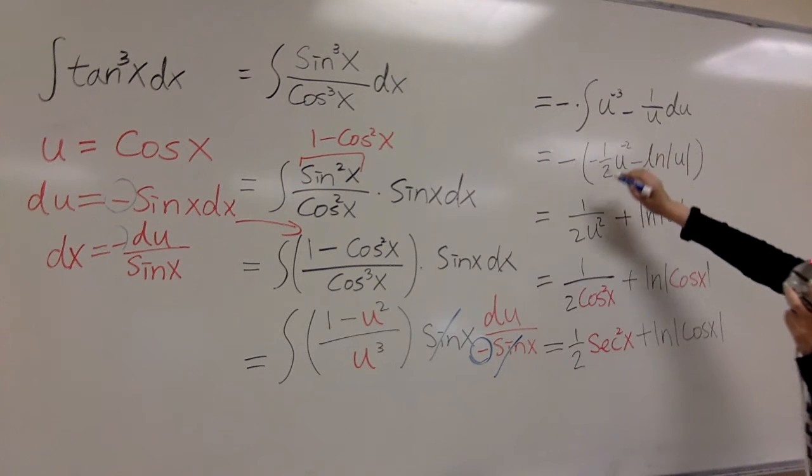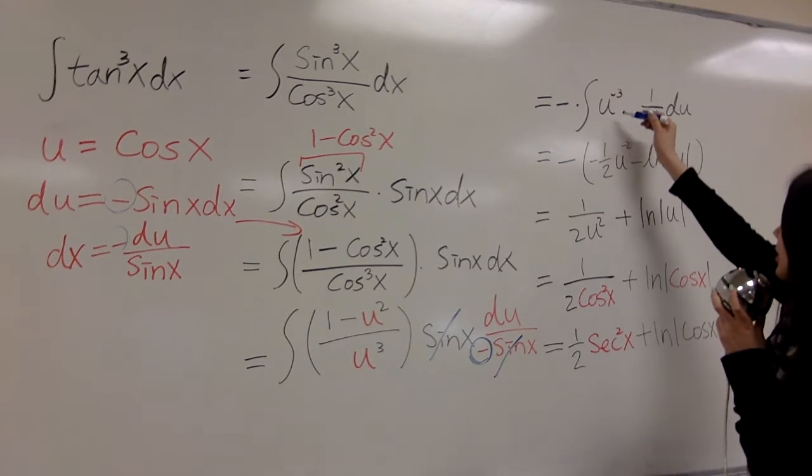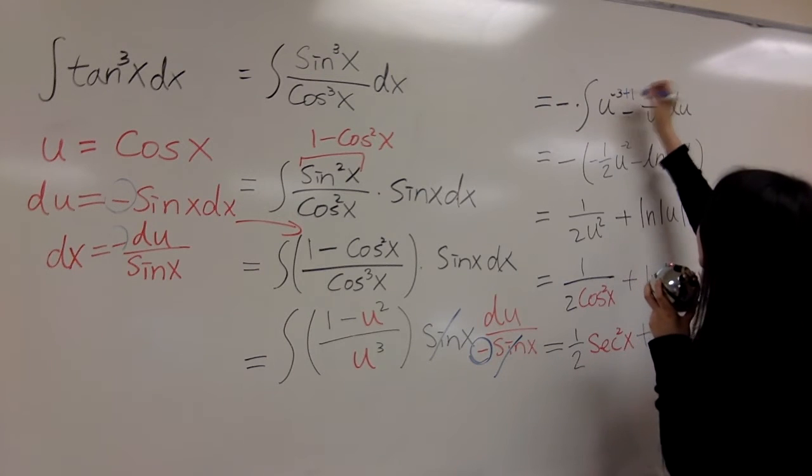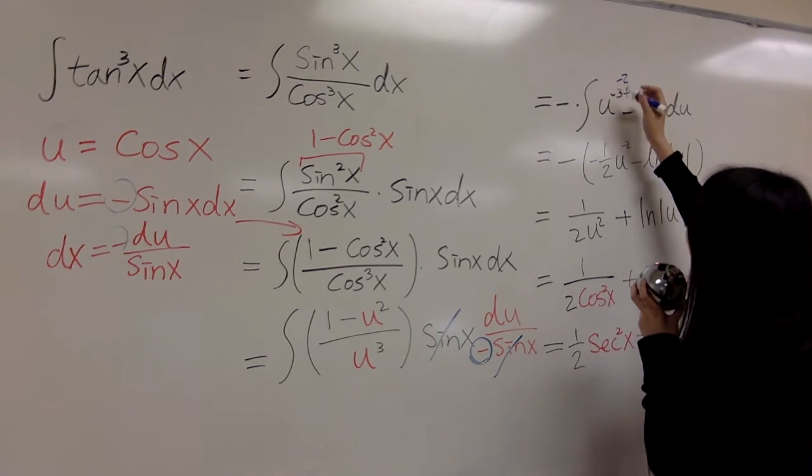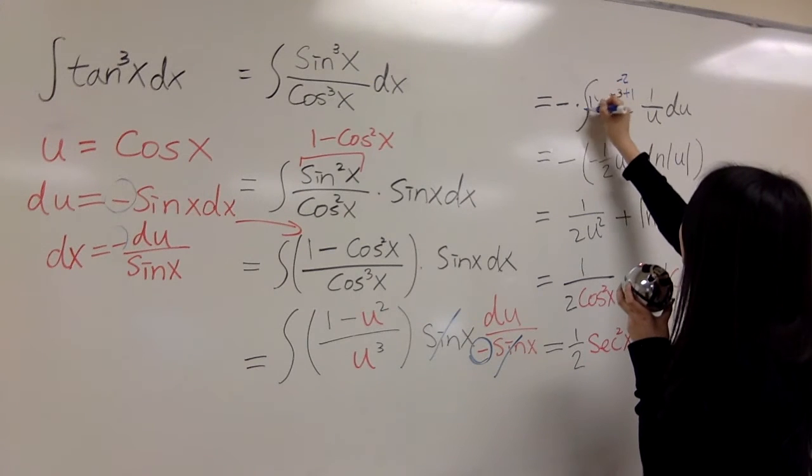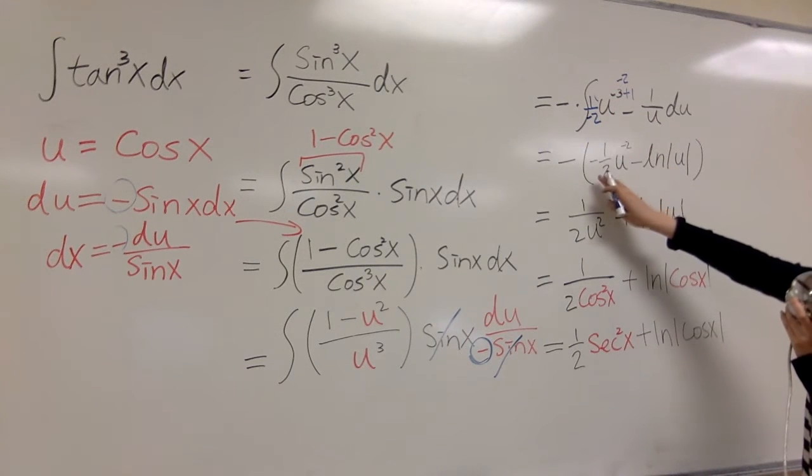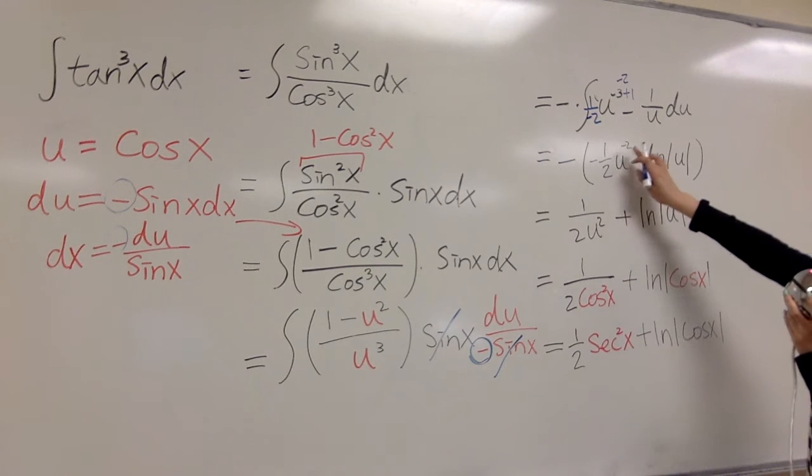And you can go straight and integrate it. This one plus 1 is negative 2. And negative 2 you put it in front: 1 over negative 2. So that will become 1 over negative 2 u negative 2 power.